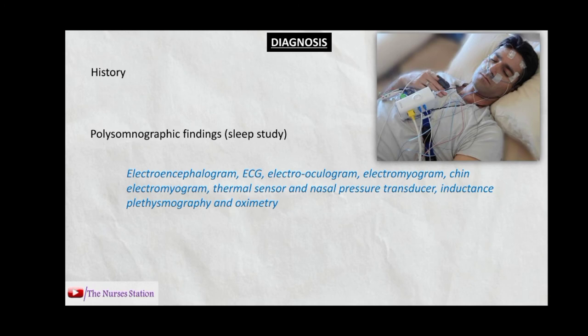The patient is connected to an electroencephalogram to monitor brain activity, an ECG to monitor cardiac activity, an electrooculogram to monitor eye movements, and an electromyogram to monitor leg movements. A chin electromyogram, a thermal sensor and nasal pressure transducer to monitor breathing at the nose, inductance plethysmography to evaluate pulmonary ventilation by measuring movements of the chest and abdominal wall, and an oximeter to measure the level of oxygen in the blood are also used.